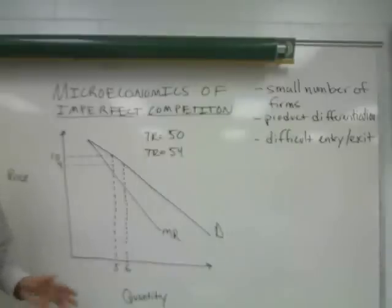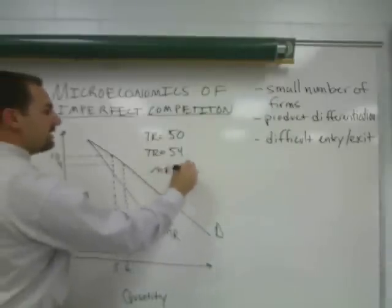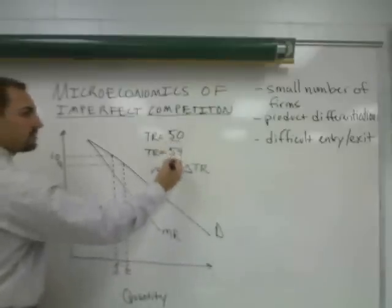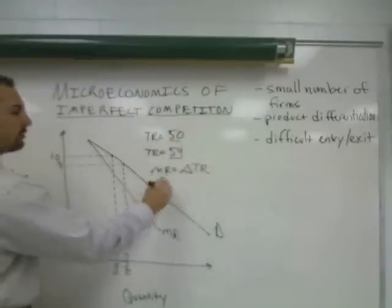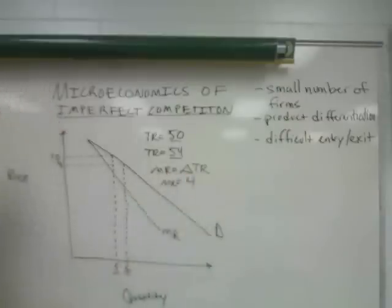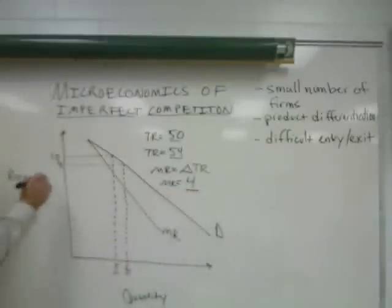Marginal revenue is nothing more than the change in total revenue. So here, as we increased from five units to six units, the total revenue changed from $50 to $54. Using this math as the example, the marginal revenue was $54 minus $50, or $4. We see that the marginal revenue of $4 is less than the price of the product when six units are sold.